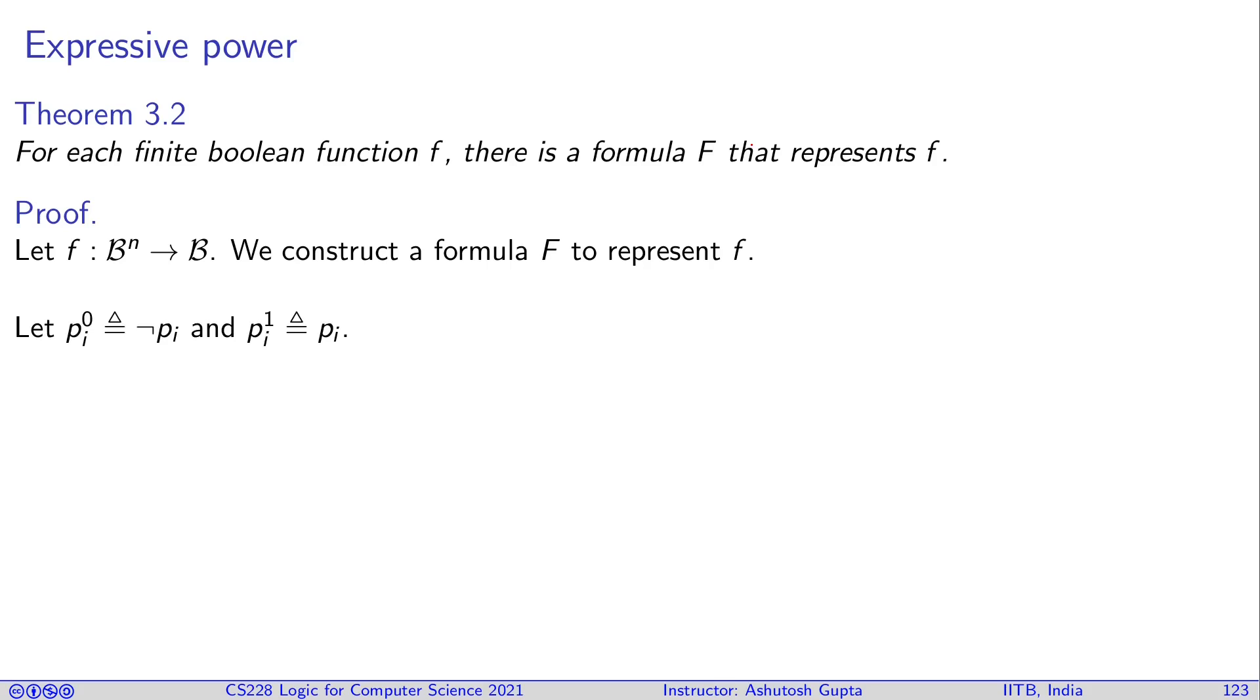Now let me construct the formula. For every vector, which is basically every row of your truth table, you construct a conjunction. Basically, if you have (1,1,0), then you say p1 and p2 and not p3. You have this kind of conjunction you can construct. Collect all these conjuncts.